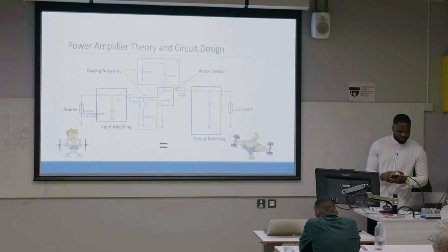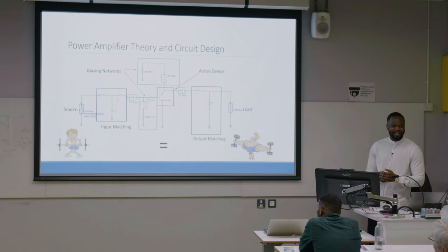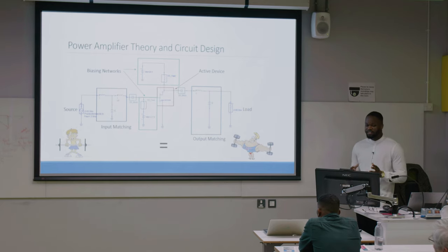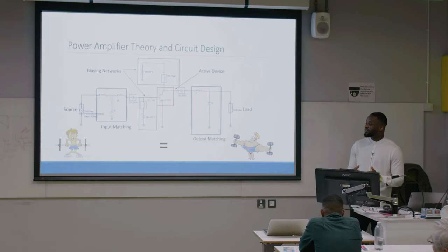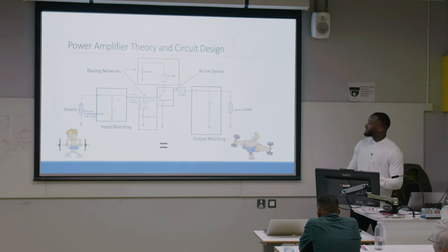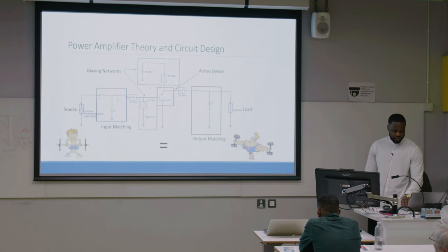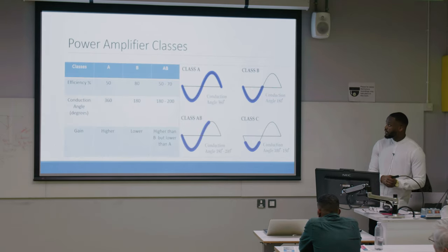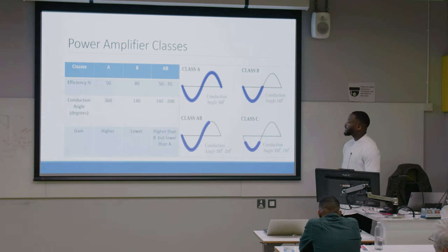Before I start I'll go through the basics of power amplifiers. A power amplifier is a circuit that uses DC power to amplify a small signal to a larger signal. It consists of an active device, a biasing network, and input and output matching networks. There are many classes of power amplifiers, but the most common are class A, class B, and class AB.